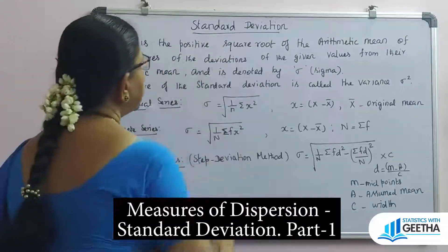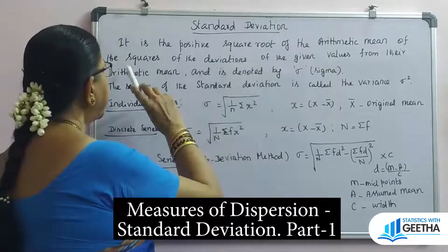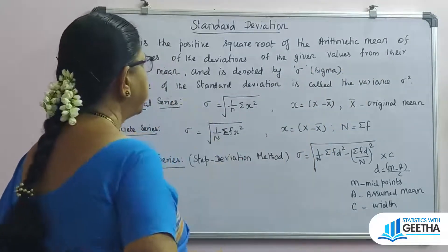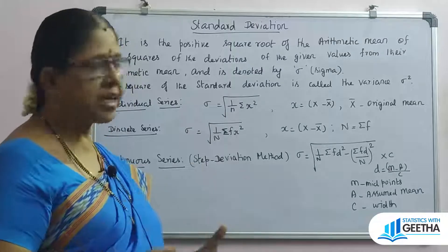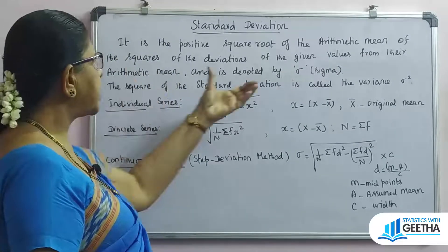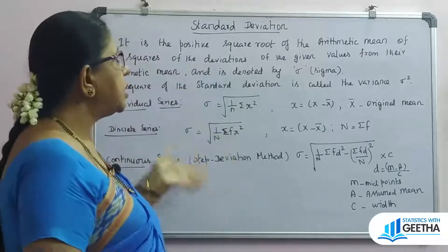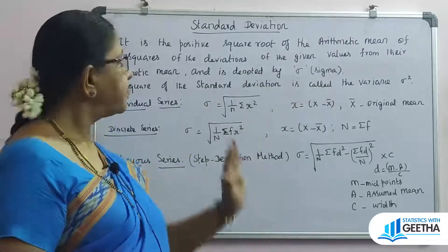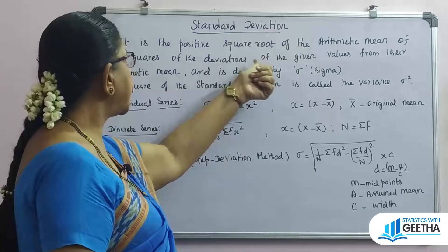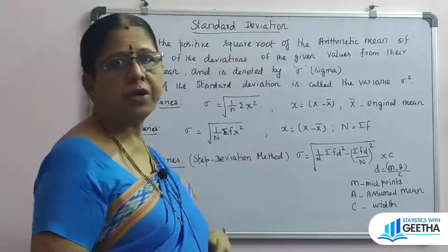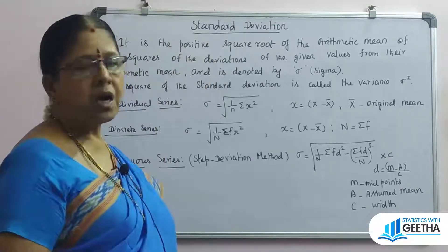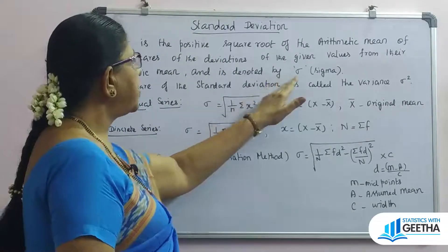Definition: standard deviation is the positive square root of the arithmetic mean of the squares of the deviations of the given values from their arithmetic mean. That means the given values are variable values. We take the squared deviations, find their average, and take the positive square root. The squared deviation's positive square root is the standard deviation, and it is denoted by sigma.